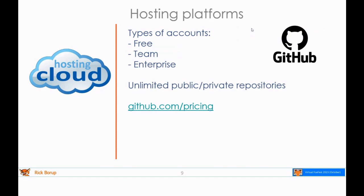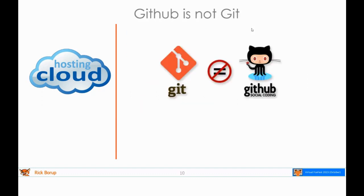GitHub was formed in 2008 as an independent hosting service and was acquired by Microsoft in 2018, which caused some concern among the open source community. But I think it's fair to say Microsoft has really gotten on board with GitHub and worked to improve and support it. It continues to be a very widely used and extremely viable product offering unlimited public and private repositories. An important distinction: GitHub is not the same as Git. Git is the version control software; GitHub is the hosting service.